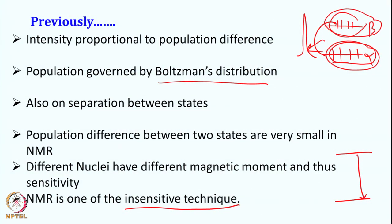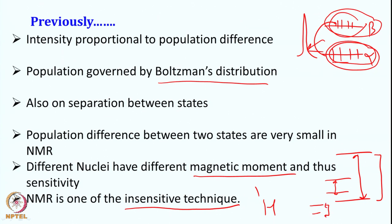Another important phenomenon is that this state difference also depends upon which type of nuclei it is, which dictates the magnetic moment of the particular nuclei. Carbon is 4 times less sensitive than proton, and therefore carbon becomes even less sensitive. Nitrogen's gamma is 10 times less, so its magnetic moment is less and the intensity obtained from nitrogen will be even less. Some nuclei are more sensitive, like proton, because it has a high magnetic moment, so the separation between the two states is higher. Nuclei like carbon-13 or N-15 are less sensitive because the separation and population difference between these two states is less.